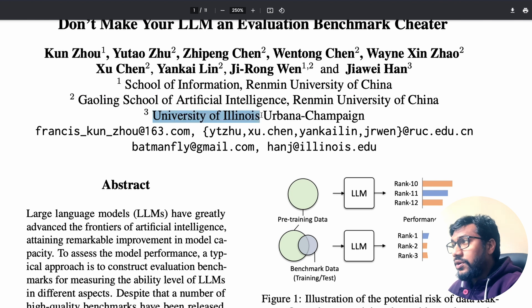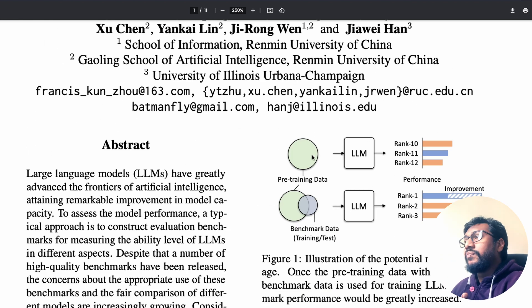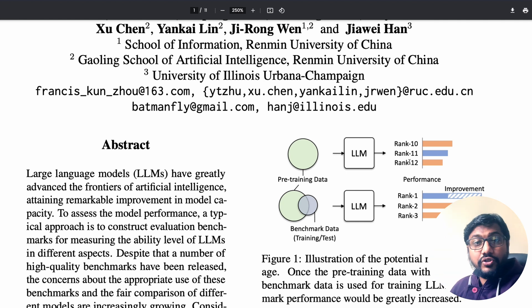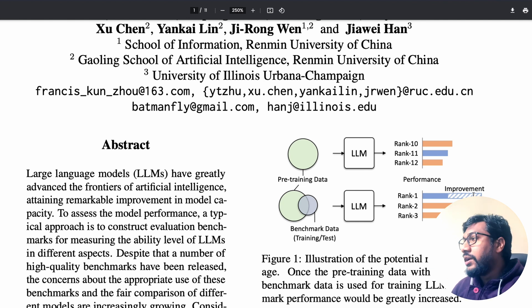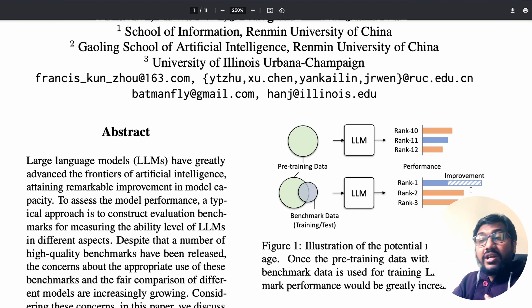The paper is from Renmin University of China and the University of Illinois. The image they use is really good for understanding what is happening: typically an LLM needs pre-training data, and when you train with just normal data you might see rank 10, 11, or 12 on a benchmark. But when a little bit of benchmark data leaks into training, you suddenly see an amazing rank improvement — the model becomes a benchmark beater sitting at the top of the Hugging Face leaderboard.